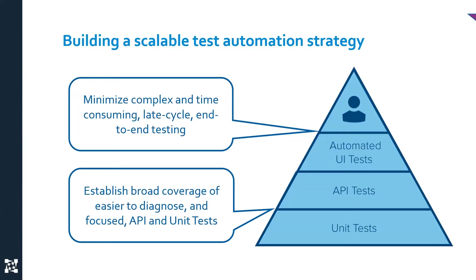Typically you want to minimize the amount of UI tests and manual tests that you're doing, but you can't completely eliminate them. UI tests are typically more brittle in nature and therefore harder to maintain. Additionally, when a UI test fails, you don't necessarily know whether that failure is due to some element in the UI, some API regression, or maybe something deeper in the code.